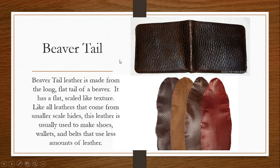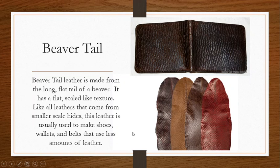Beaver tail leather is made from the long, flat tail of the beaver and has a flat scale texture. Like all leathers that come from smaller-scale hides, this leather is typically used to make shoes, wallets, and belts that require less leather.